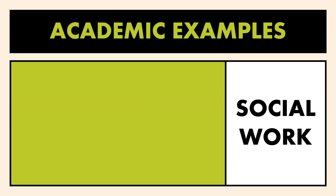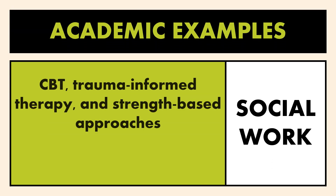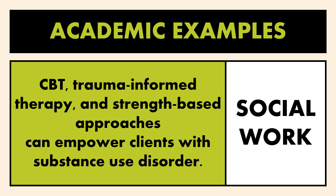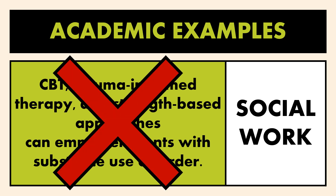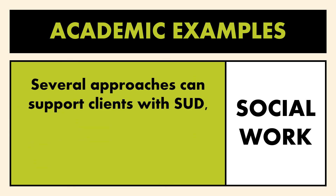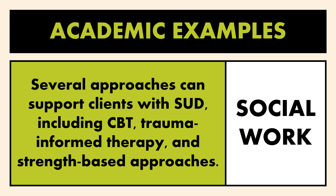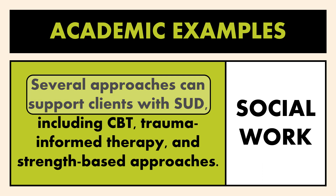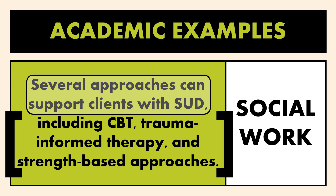We have something similar for social work: 'Cognitive behavioral therapy, trauma-informed therapy, and strength-based approaches can empower clients with substance use disorder.' But again, we're giving the reader too much information to start. We want to give them the context first: 'Several approaches can support clients with substance use disorder, including CBT, trauma-informed therapy, and strength-based approaches.' The reader has that context and uses it as a framework to understand the ideas that follow.